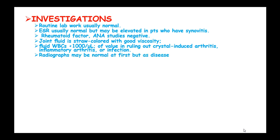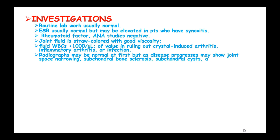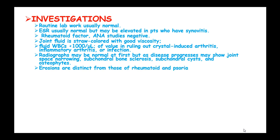Radiographs may be normal at first, but as the disease progresses they may show joint space narrowing, subchondral bone sclerosis, subchondral cysts, and osteophytes. Erosions are distinct from those of rheumatoid and psoriatic arthritis.